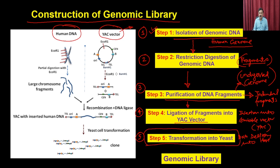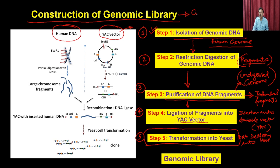This is what is called the genomic library. You get colonies that represent the genomic content of that particular DNA, irrespective of whether the content is expressing a protein or not. The genomic library represents the genomic content of the organism — it represents all genes irrespective of their expression status.